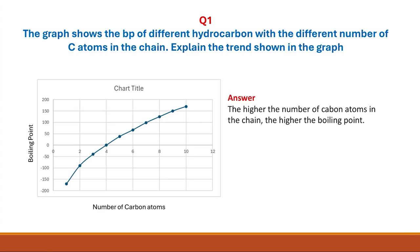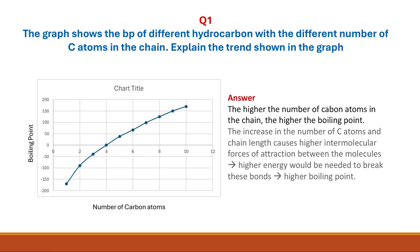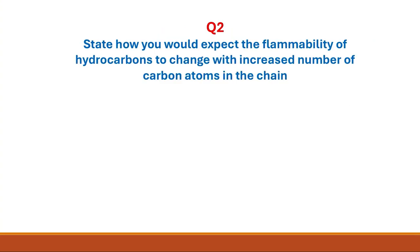To answer this, we can see that the higher the number of carbon atoms in the chain, the higher the boiling point. The increase in the number of carbon atoms and the increase in chain length causes higher intermolecular forces of attraction between the molecules. So higher energy would be needed to break these bonds, resulting in higher boiling points.